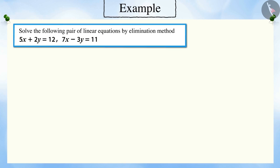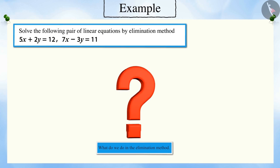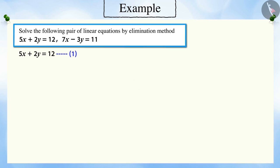Solve the following pair of linear equations by the elimination method. Can you tell what is the first step we need to follow in the elimination method? Correct! First we make the coefficient of any one of the variables equal.